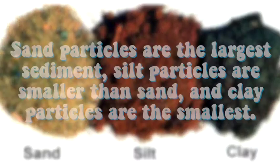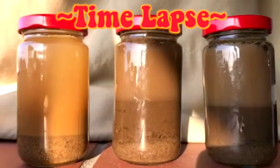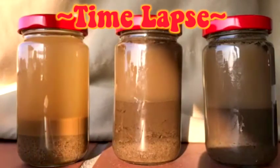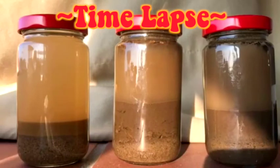Step 4: Soil can contain different types of sediments — commonly sand, silt, and clay. Sand particles are the largest sediment, silt particles are smaller than sand, and clay particles are the smallest. Soil scientists can separate a soil sample into layers and particles using a soil sedimentation jar.